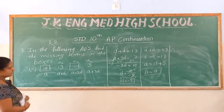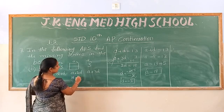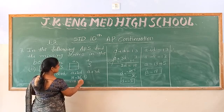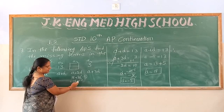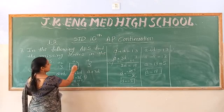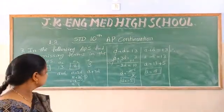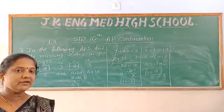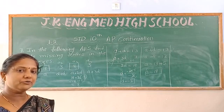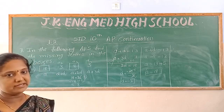Now for the third box, I find a plus 2d. A value is 18 and 2d is 2 times minus 5 equals minus 10. So 18 plus (minus 10) equals 18 minus 10 equals 8. The third blank is filled as 8. In this manner we have to simplify using the general form of AP to fill in the blanks.